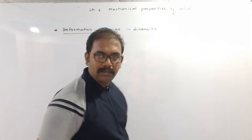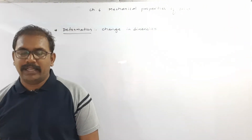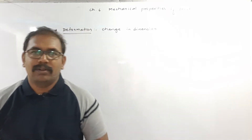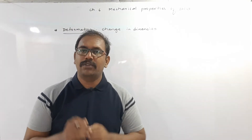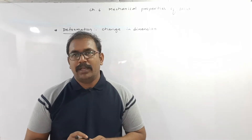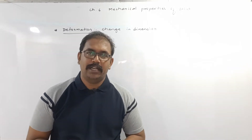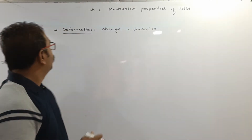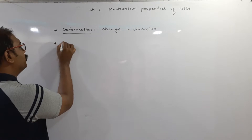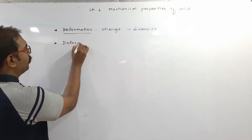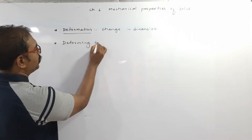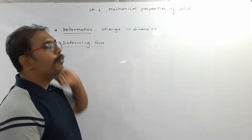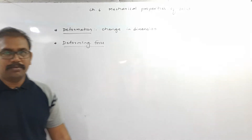Dimension may be length, volume, etc. When we consider the example of a sponge and we apply a force, its size and shape changes — that is called deformation. We can say the sponge is deformed. The force which produces change in dimension, or the force which produces deformation, is called the deforming force.